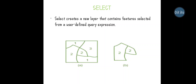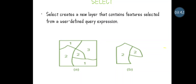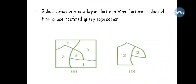The next one is the Select tool, which is similar to Clip. But in the Select tool, the user defines a query expression to select a particular region. Whatever area or region the user needs, the user defines it, and that particular area will be selected and clipped away from the existing feature data and given as output.